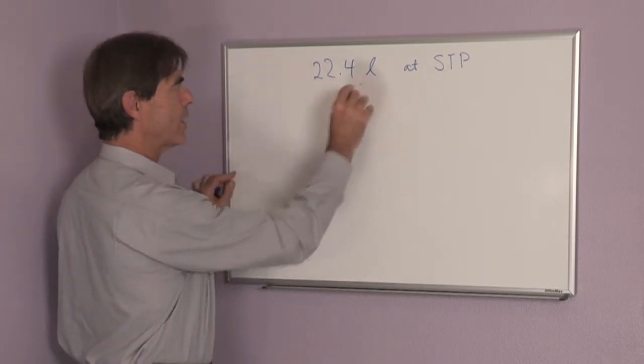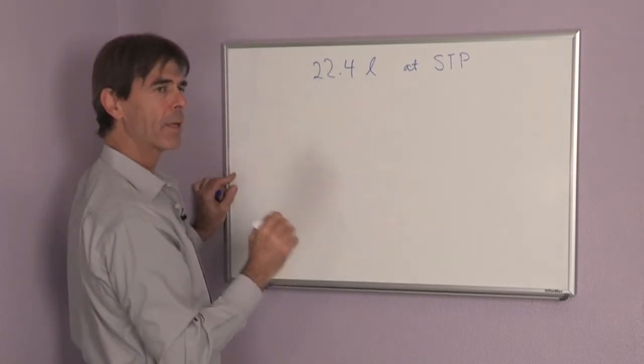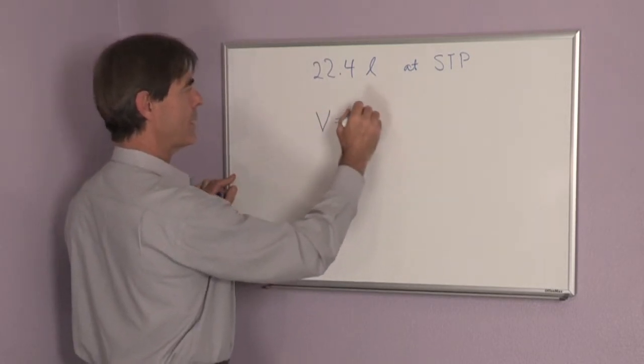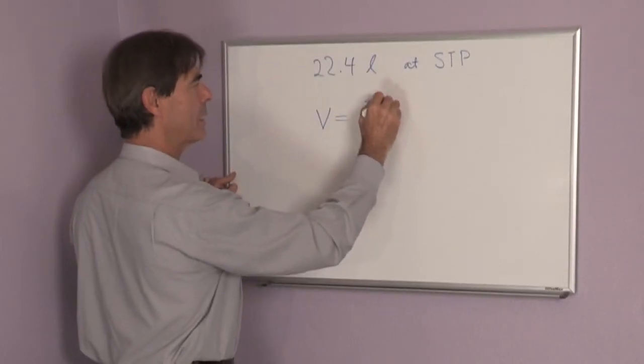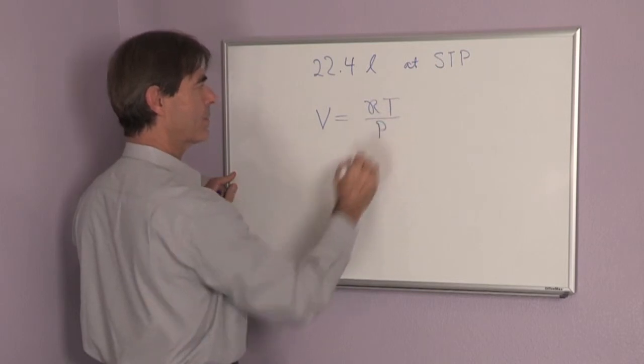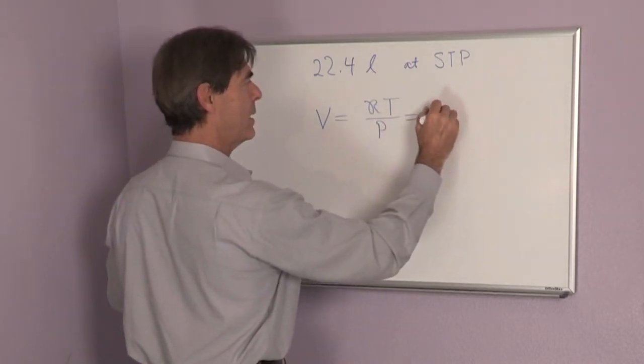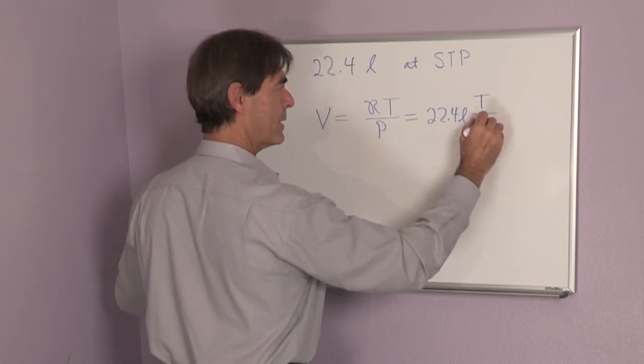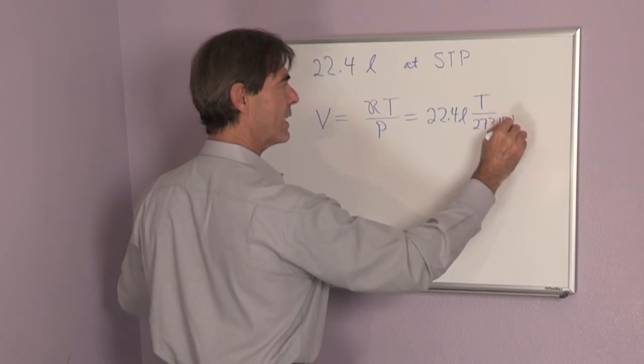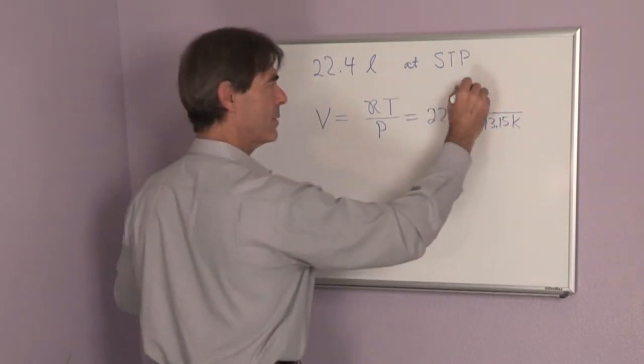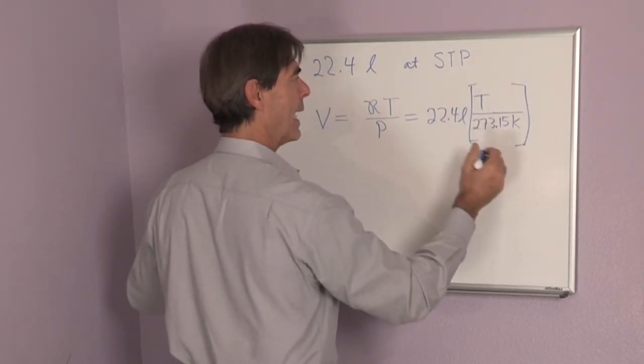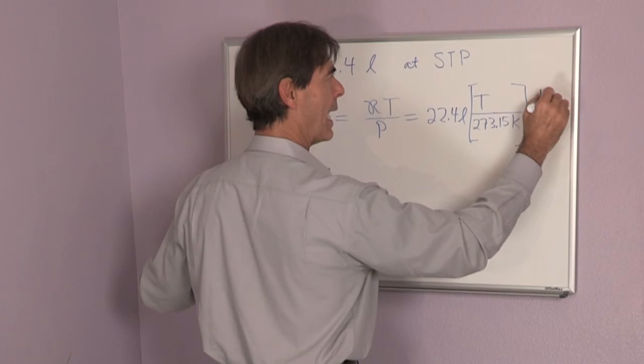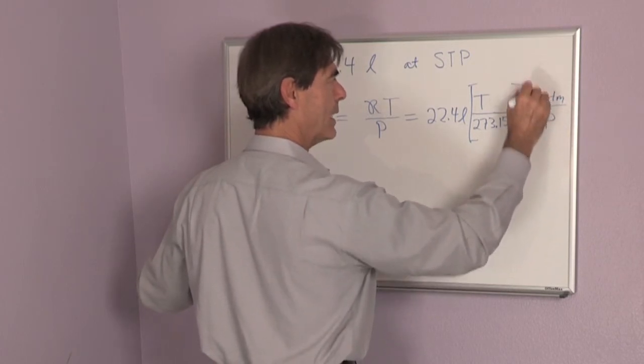If now I want to know it at a different temperature and a different pressure, I'm going to use the ideal gas law. So remember that the volume is equal to this constant R times T divided by the pressure. And this is 22.4 liters times the temperature divided by 273.15 Kelvin. And I have to put the temperature in Kelvin. And I divide this by the pressure. So that's one atmosphere divided by the pressure, given in atmospheres.